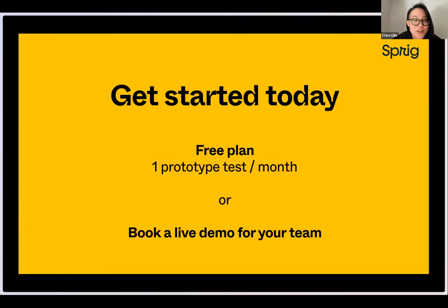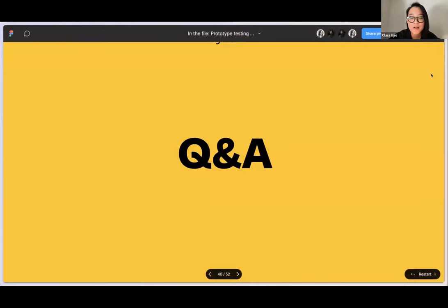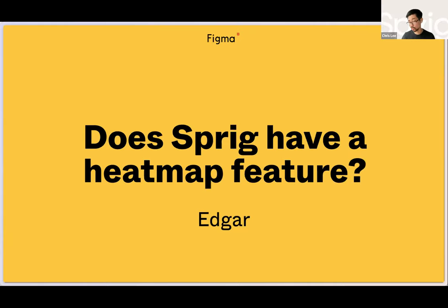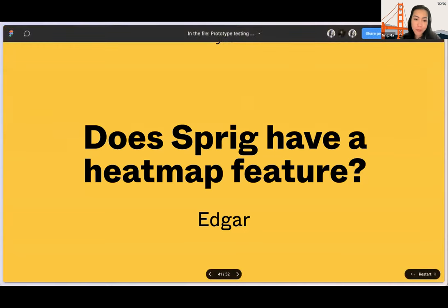We have a bunch of questions, but first — thank you for coming on here today. I loved the framing around de-risking as you're thinking about gathering insights and testing your work. Let's jump into Q&A. From Edgar: does Sprig have a heat map feature? We do not currently. It's definitely one of the most popular requests we're hearing. We don't have a heat map feature currently, but we'll continue to evaluate whether we should add it.